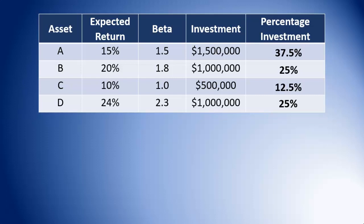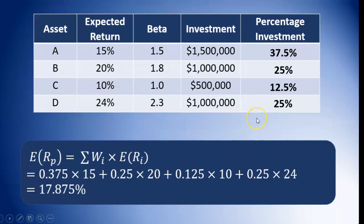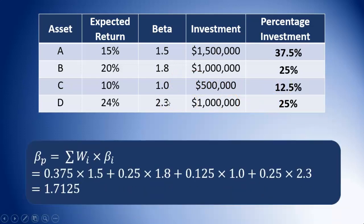For the expected return, we take the weighted average of the expected returns of each asset: 0.375 times 15 plus 0.25 times 20 plus 0.125 times 10 plus 0.25 times 24, which works out to 17.875%. For the portfolio beta: 0.375 times 1.5 plus 0.25 times 1.8 plus 0.125 times 1.25 plus 0.25 times 2.3, and that works out to a portfolio beta of 1.7125.